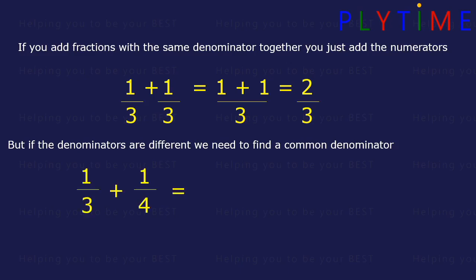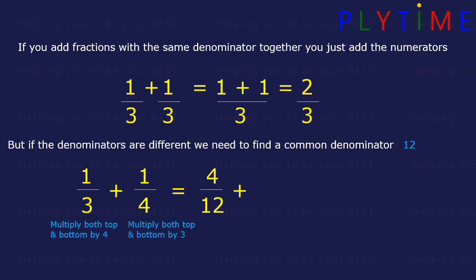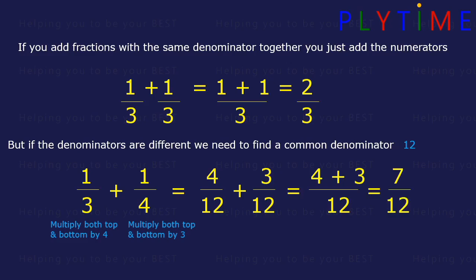1 third plus 1 quarter. The common denominator is 12. To convert a third into twelfths, we multiply the top and the bottom by 4, so we end up with 4 twelfths. And to convert a quarter into twelfths, we multiply the top and the bottom by 3, giving us 3 twelfths. So now we have 4 plus 3 over 12. 4 plus 3 is 7, so we end up with 7 twelfths.